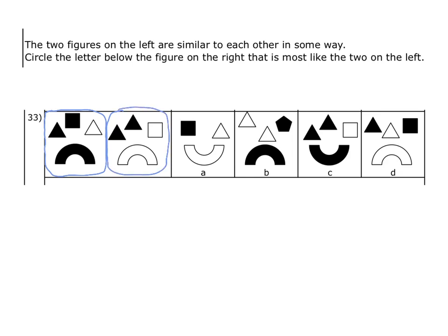First of all, we can see that both figures share this semicircular shape in this orientation. Then we can see that both figures have two triangles. Although they are shaded differently in each of the figures, they also share one square. So the similarities we're looking for are the semicircular shape in this orientation, two triangles shaded in a variety of ways, and a square.